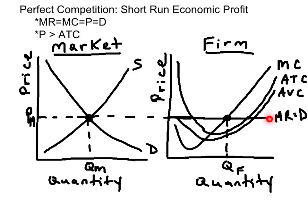The firm will sell all of its output at the market price. The firm will maximize its profit where marginal cost equals marginal revenue. Here, it's labeled Q sub F.